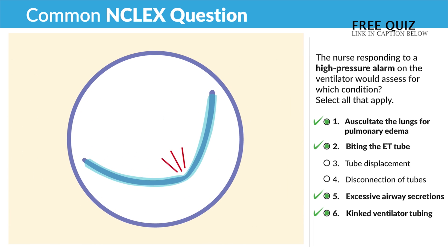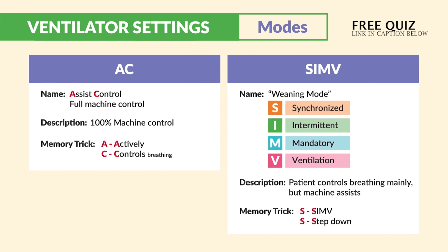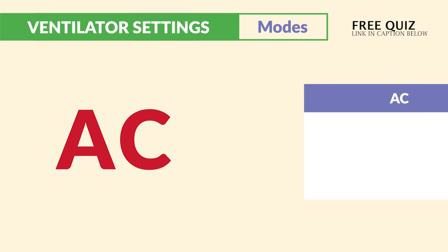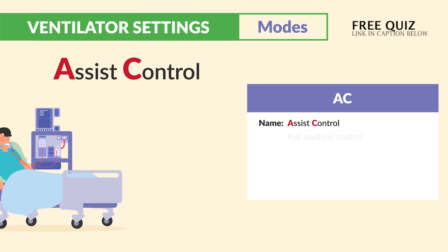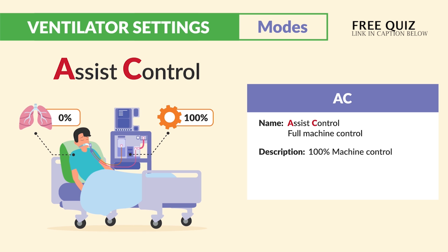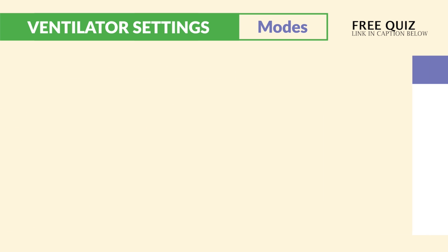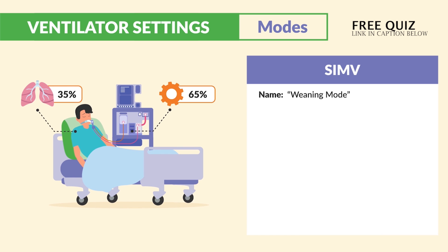Now let's cover modes. The two you need to know are AC and SIMV. AC stands for assist control — this means full machine control over the patient's respiratory rate, 100% machine control. It's typically used after CPR or in long-term life support. Just think: AC actively controls breathing.